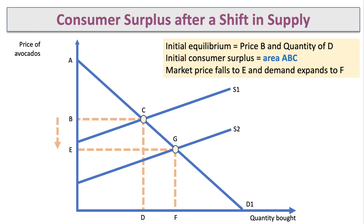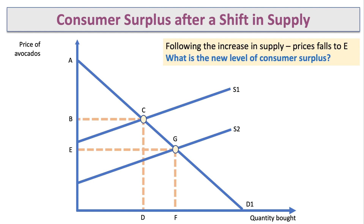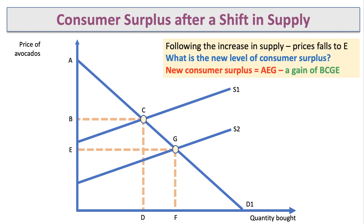The new level of consumer surplus is area AEG, compared to ABC, representing a gain in welfare — an increase of BCGE. Consumers have benefited because avocados are now more cheaply available. The willingness and ability to pay hasn't changed, but supply conditions have changed, bringing the price down.